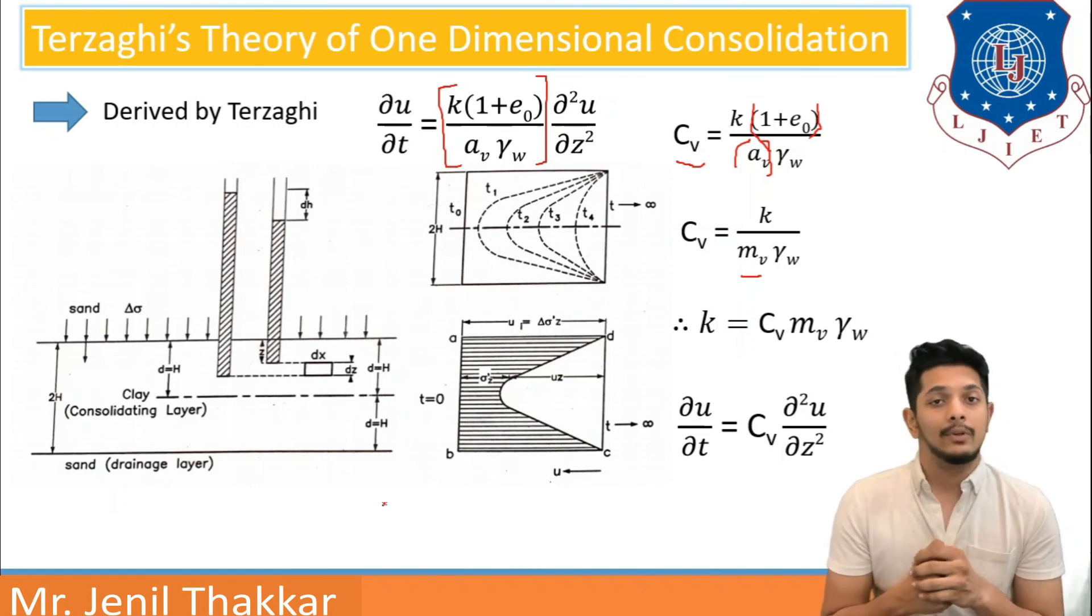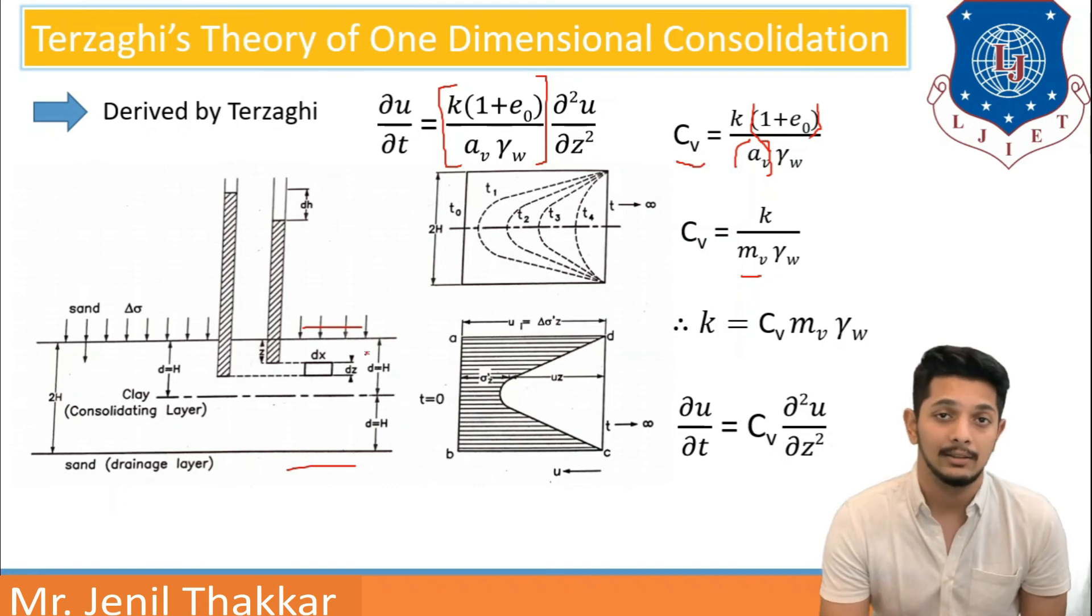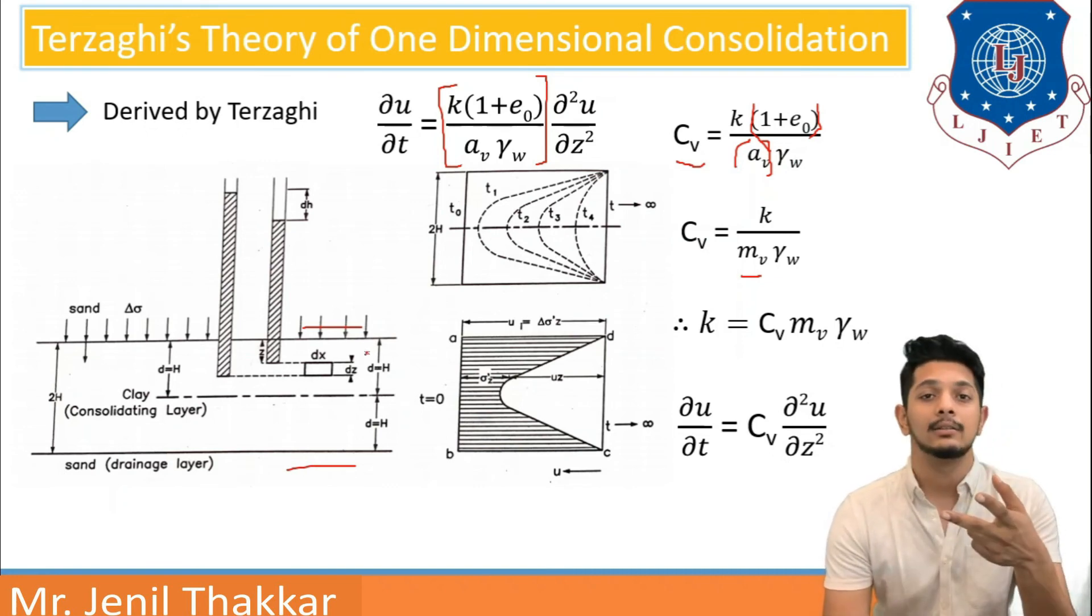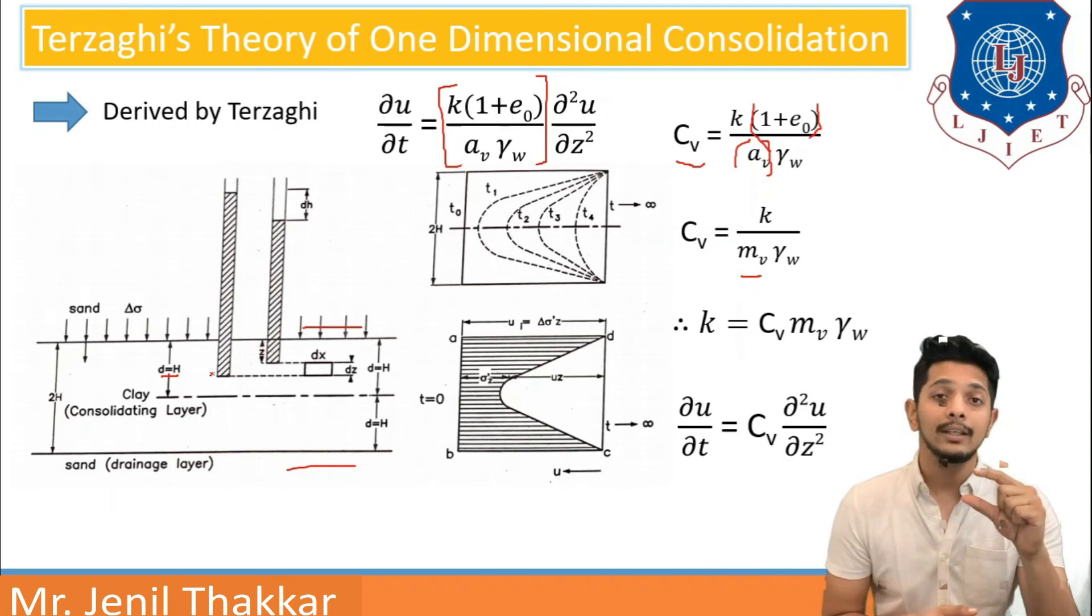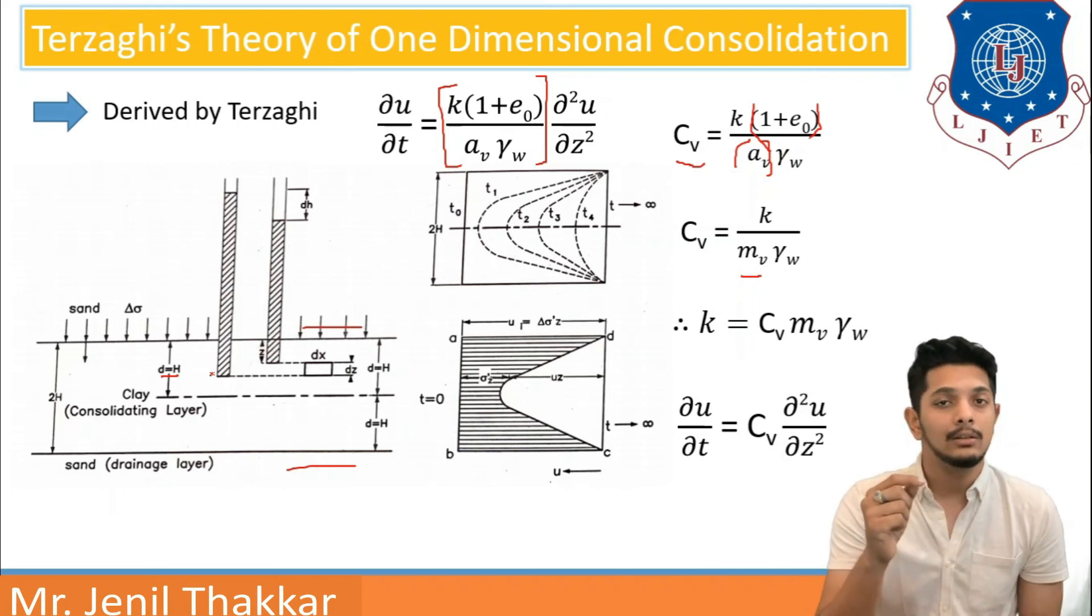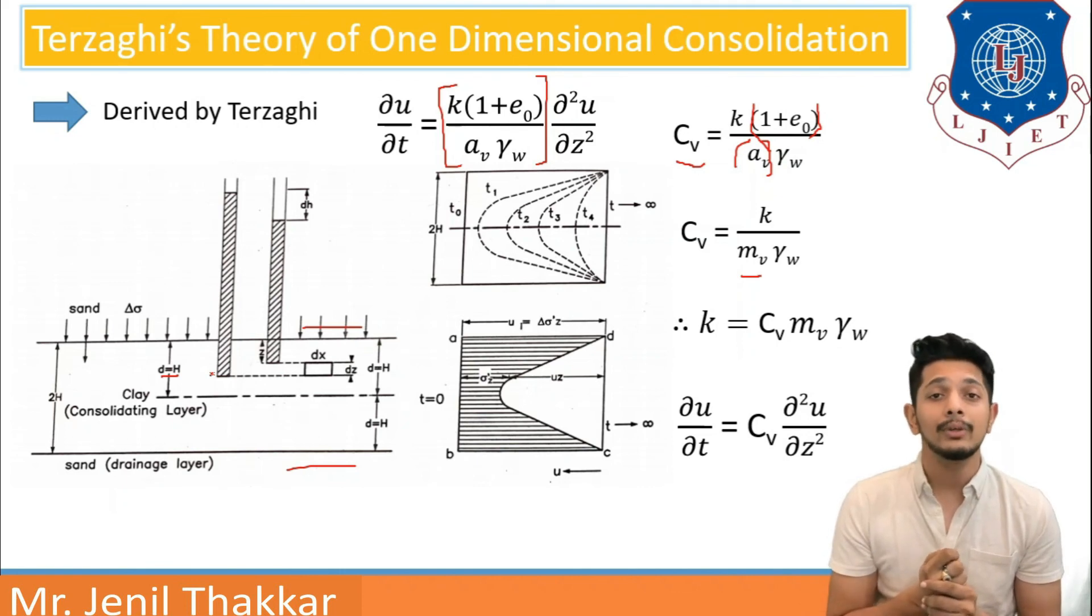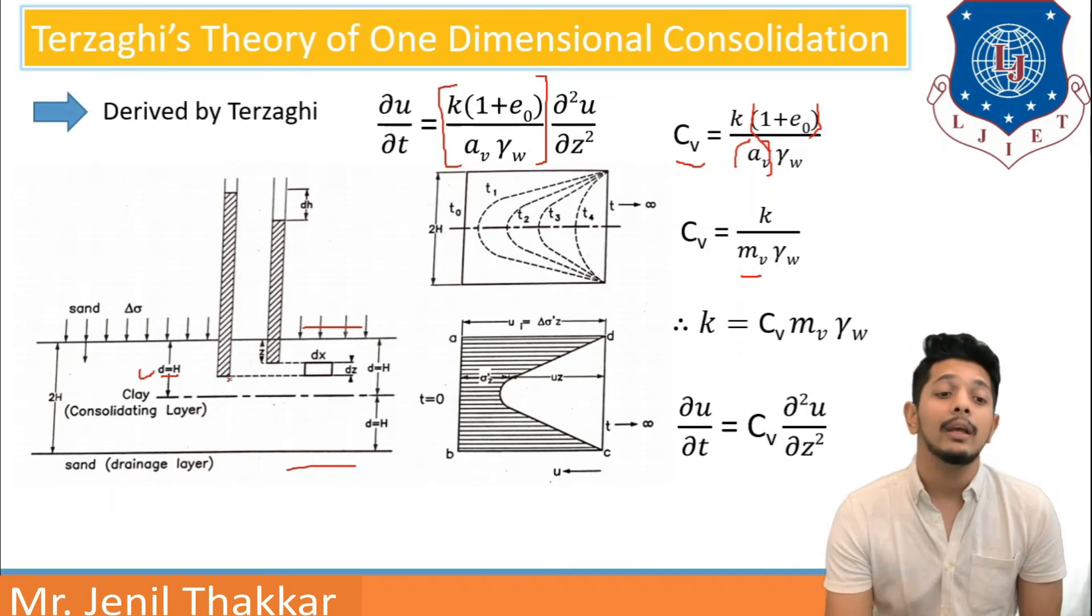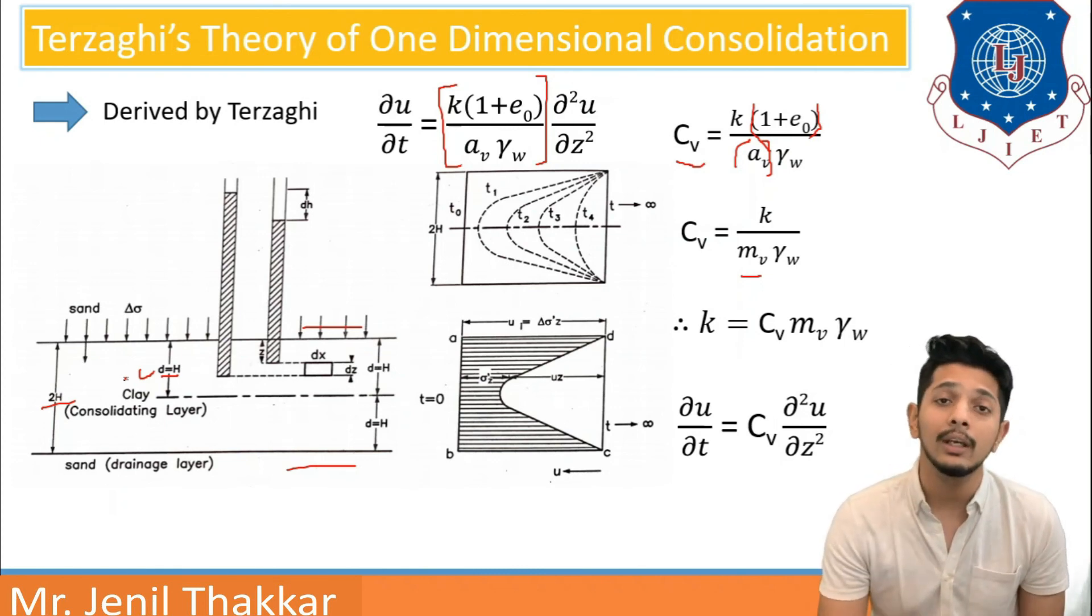If there is only single layer of drainage provided either at top or bottom, it is a single drainage case. If drainage is provided on both sides, like here we have taken, it is a double drainage case. Small d equals h will be here. Small d is the length through which water has to go to reach the drainage medium. If you are using double drainage soil, you have to take d equals h. If you are having single drainage soil, you have to take d equals 2h because the path length will be greater in single drainage. In double drainage, it will be shorter, so we have to take half the length.